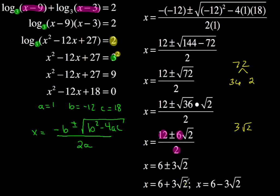So 6 plus 3 square root of 2, that's going to have to be a little bit more than 9. So if I have a little bit more than 9, minus 9, this value in x minus 9 for log base 3 of x minus 9, that part's going to be positive. And if I do the same thing with the x minus 3 part, log base 3 of x minus 3, that's also going to be positive. So I know this value works right here, 6 plus 3 square root of 2.